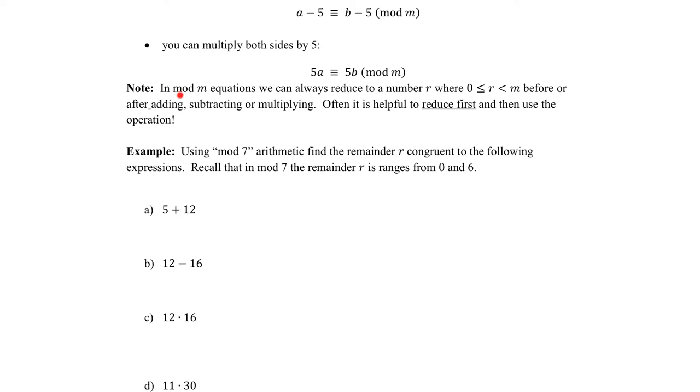In mod m equations, we can always reduce to the remainder, we'll call it r. Remember that the remainder is always in between 0, 1, 2, 3, 4, all the way up to right before the mod. So if it's mod 7, it would be 0 all the way to 6. We can do this reducing before or after adding, subtracting, or multiplying.